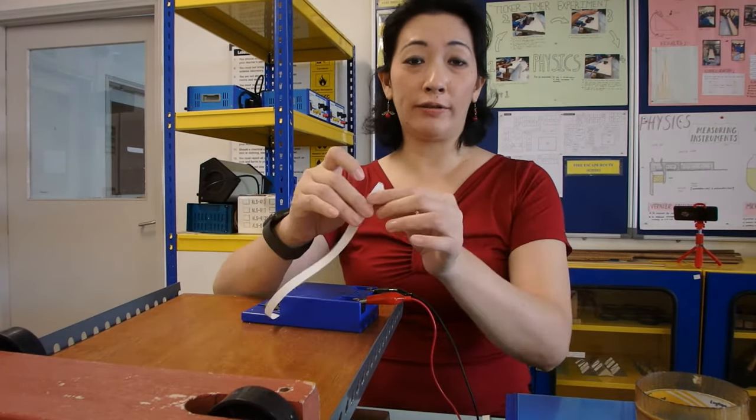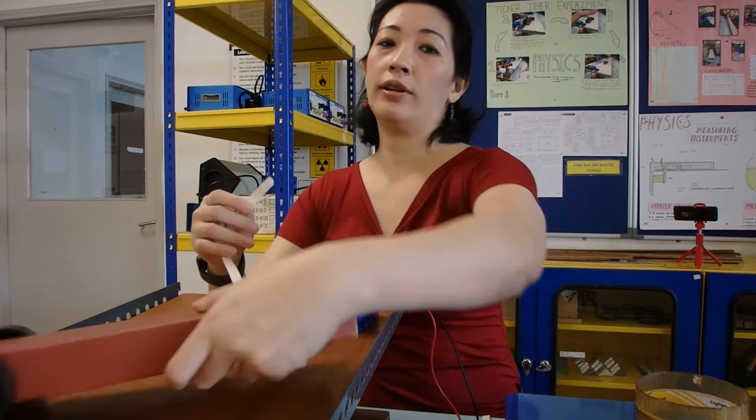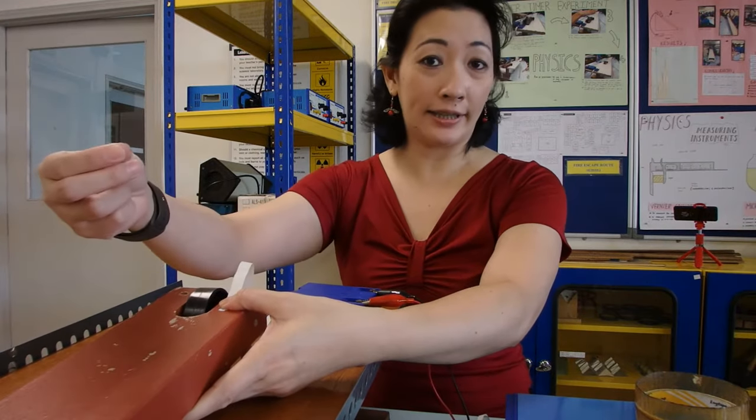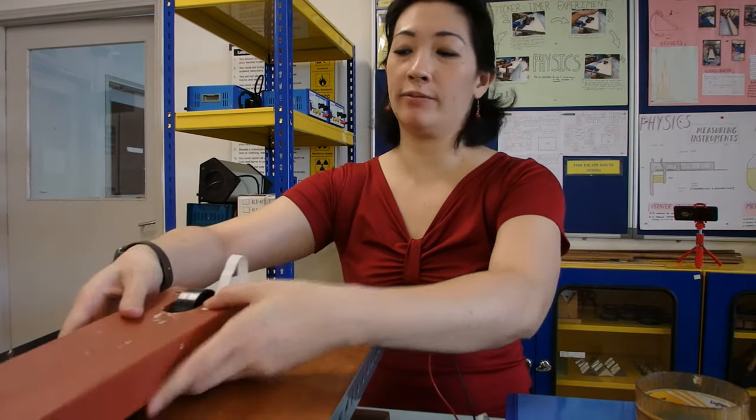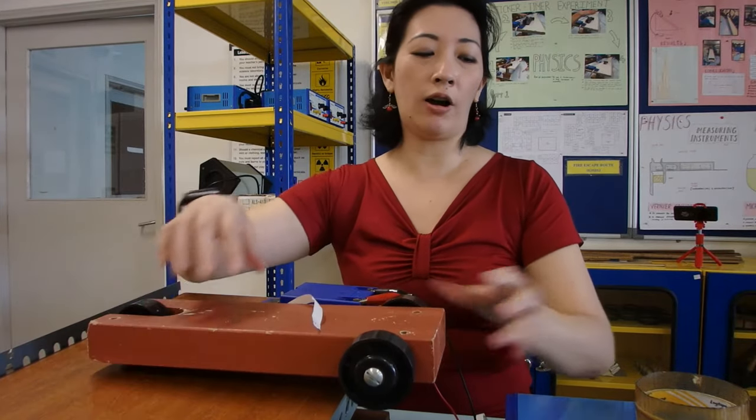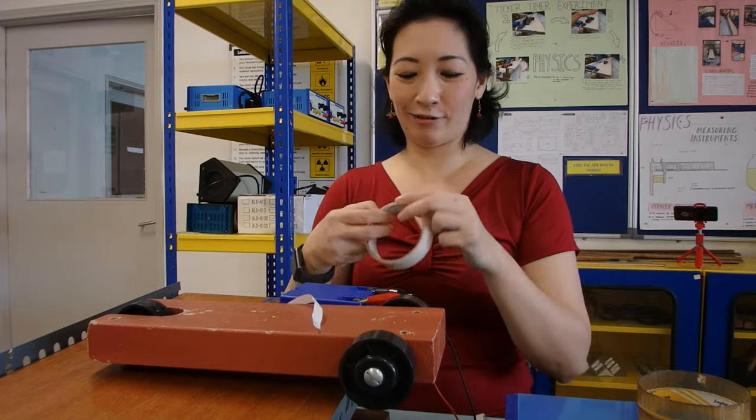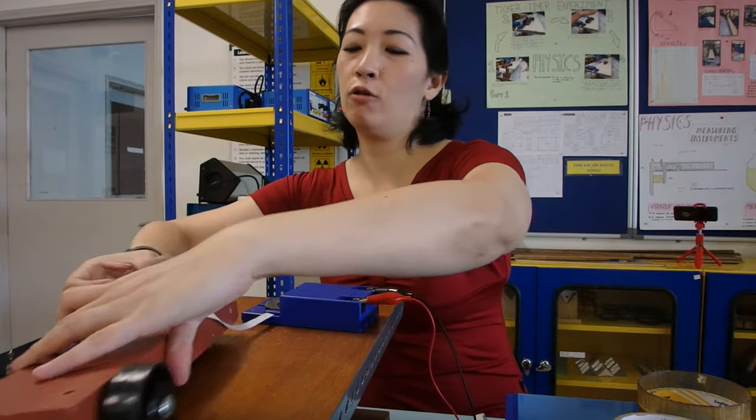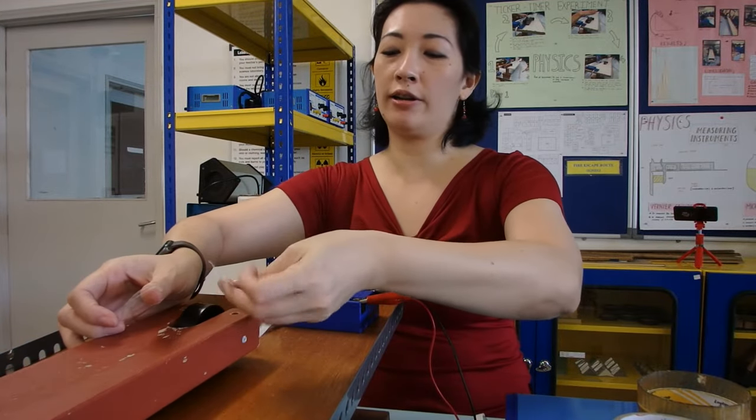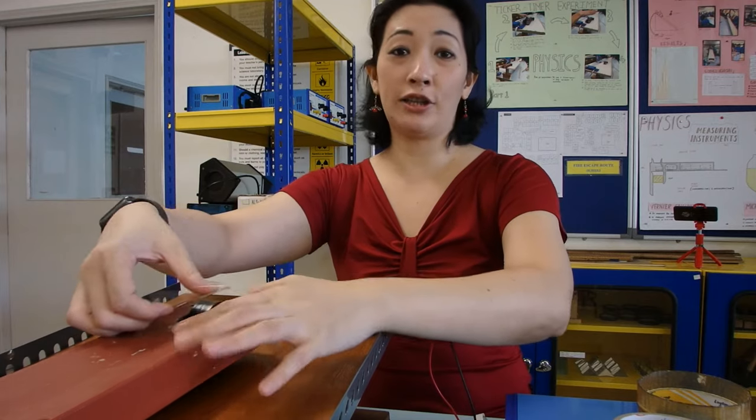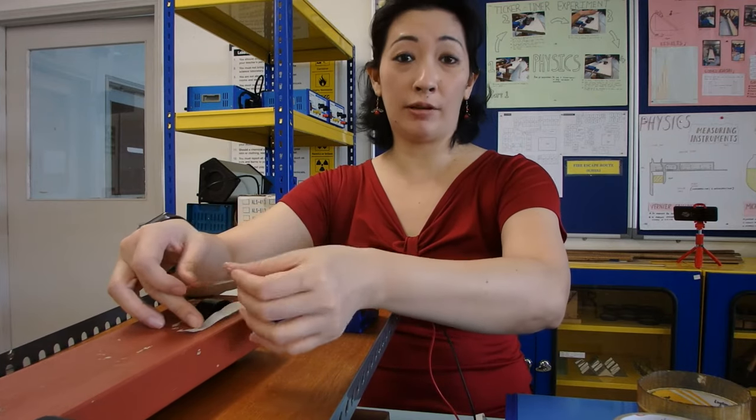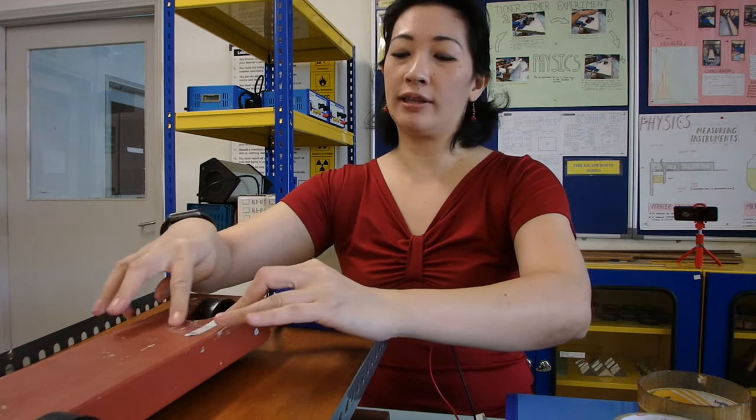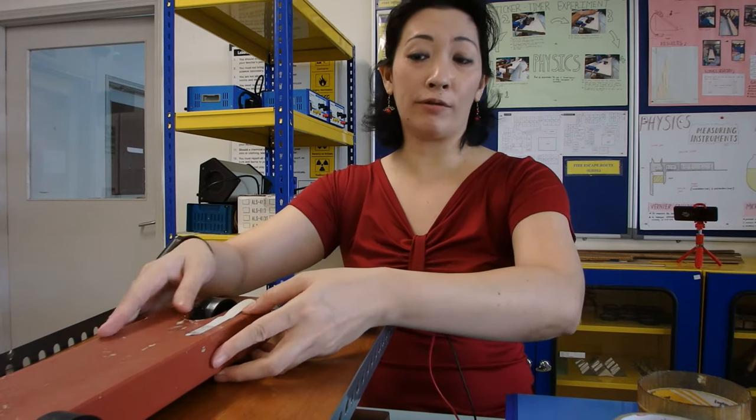What we're going to do is stick this end onto the back of the trolley so that as the trolley rolls down the ramp, it's able to pull the ticker tape together as it moves. How we're going to stick the tape on is by using cellotape. Make sure that where we stick the tape on the trolley is at a position where it does not disturb the movement of the trolley, so that as the trolley rolls down and pulls the ticker tape, the tape doesn't get stuck in the wheels or interfere with the motion.